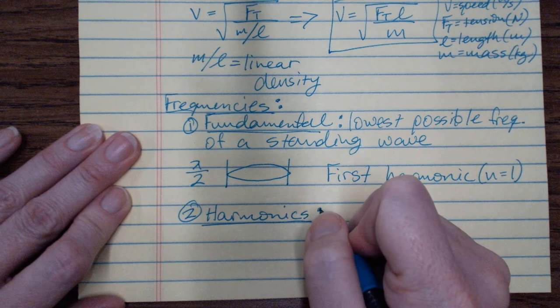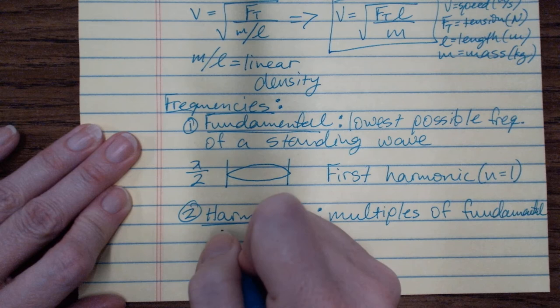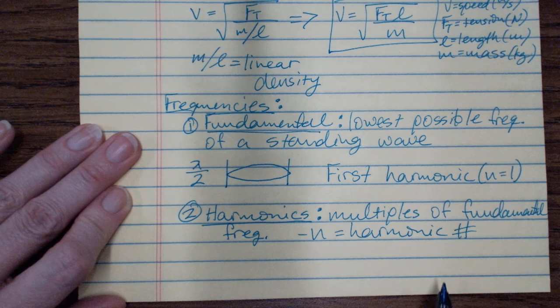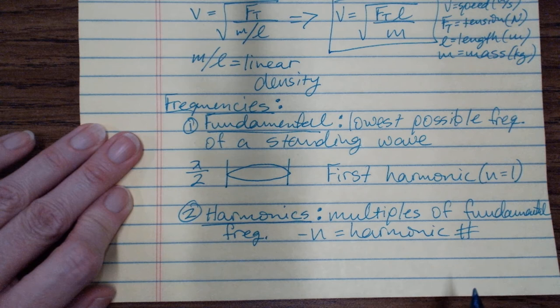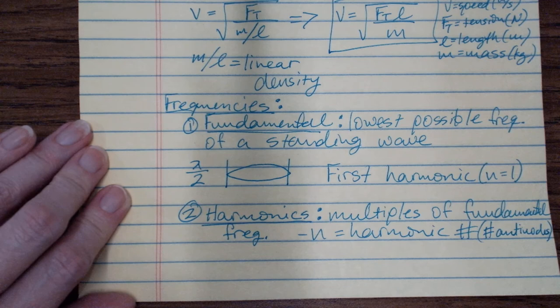Harmonics are multiples of the fundamental frequency. The n is called the harmonic number, and for strings only, this equals the number of antinodes. It's different for different devices, but for strings it's the number of antinodes.